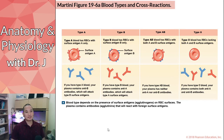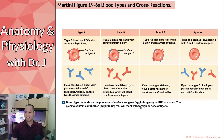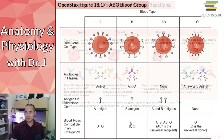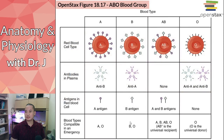In this class, as in most A&P beginner classes, we focus on what we call ABO and sometimes Rh blood types. For this class we use ABO-Rh, and if you're taking the lab, it uses the same system.